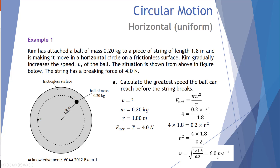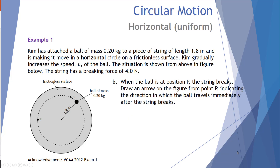The second part of the question: when the ball is at position P the string breaks — draw an arrow from point P indicating the direction in which the ball travels immediately after. The velocity is always perpendicular to the radius, and the ball is moving anti-clockwise, so it would move straight down as shown in the diagram.